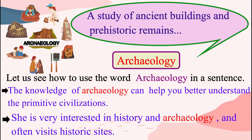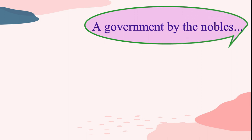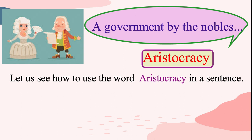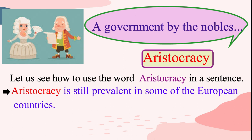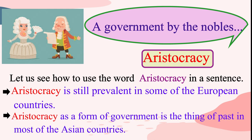Let us see the next group of words. A government by the nobles, or we can simply say aristocracy. Aristocracy is a form of government in which power is held by the nobility. Aristocracy is still prevalent in some of the European countries. Aristocracy as a form of government is the thing of the past in most of the Asian countries.